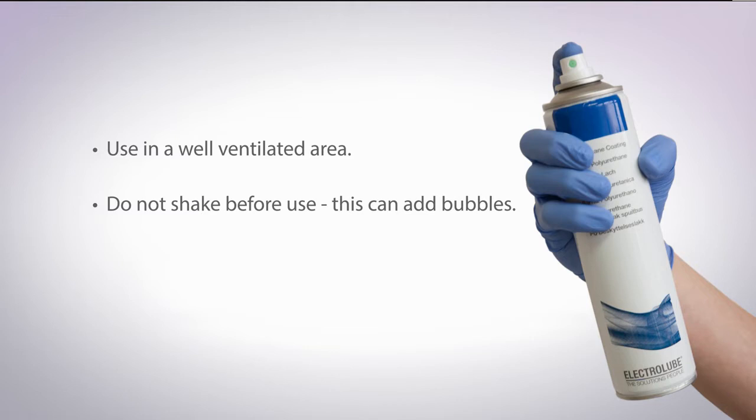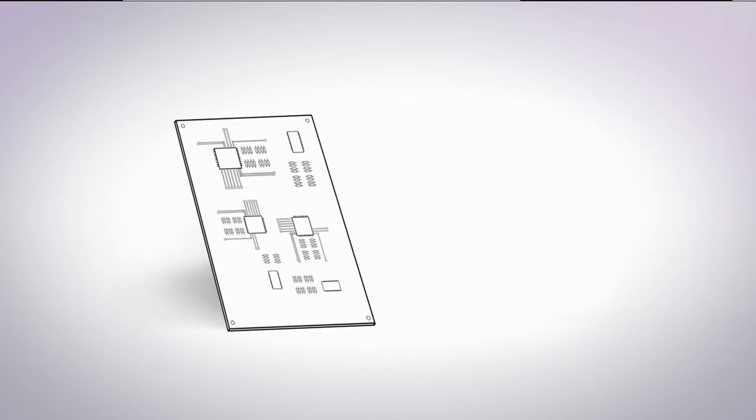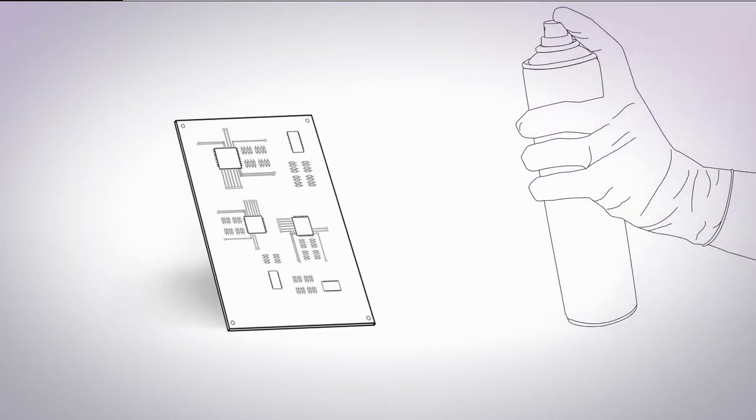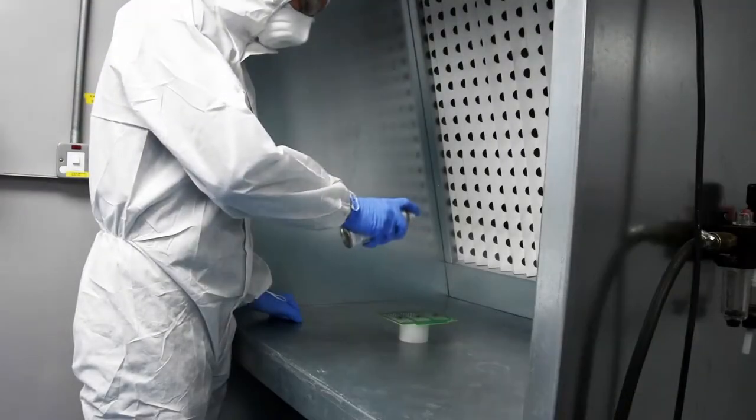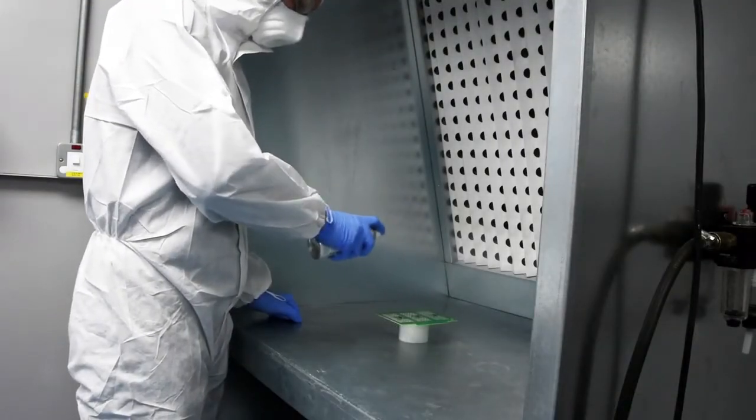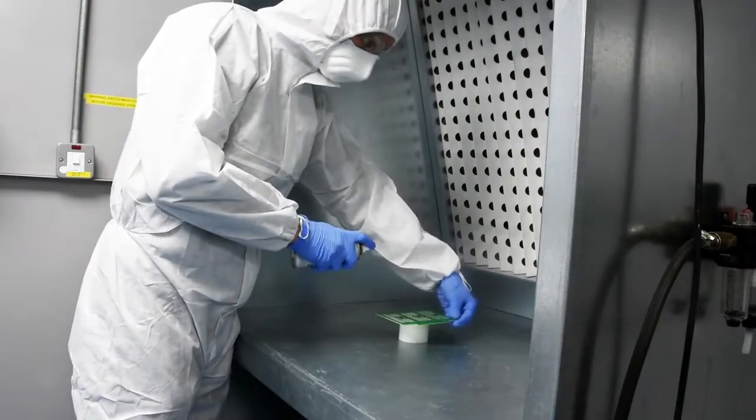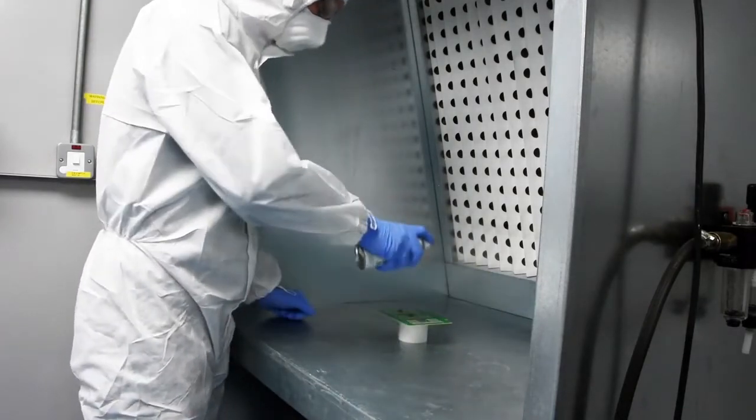Do not shake a coating can before use as this can add bubbles to the mixture which can be transferred to the board. The board should be at 45 degrees to the can and around 20 to 30 centimeters away. Spray the board in a continuous steady Z motion, coating evenly.